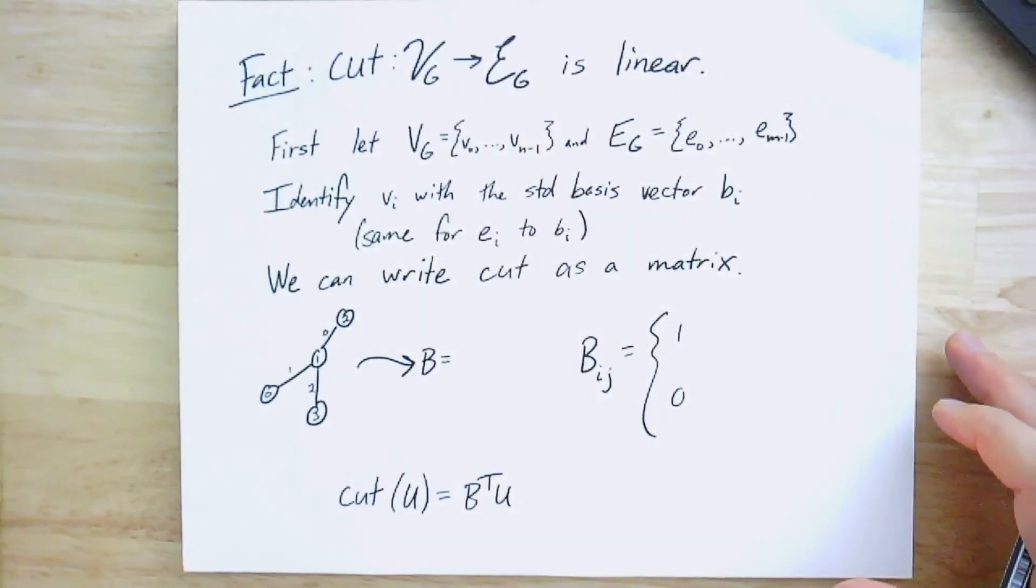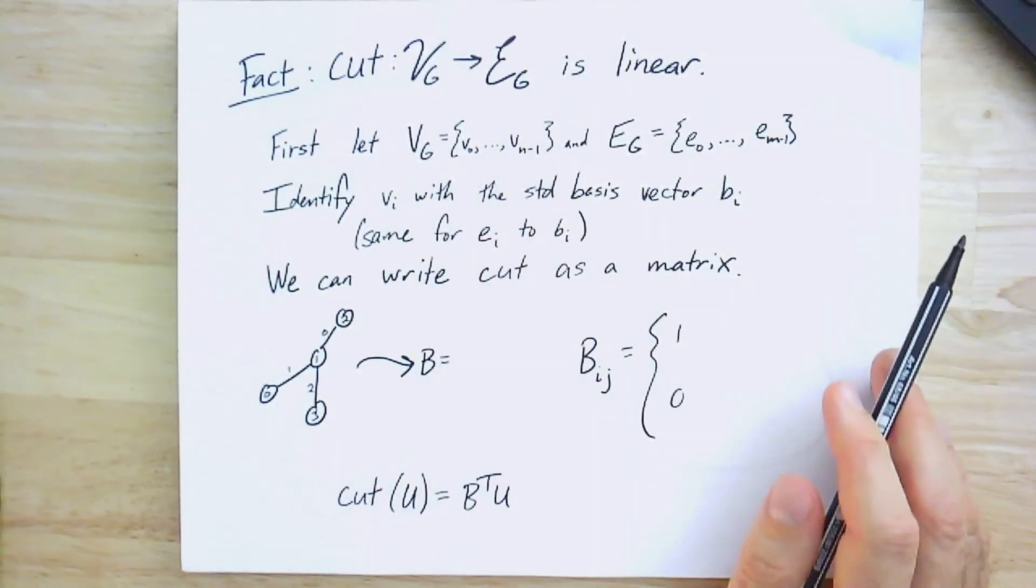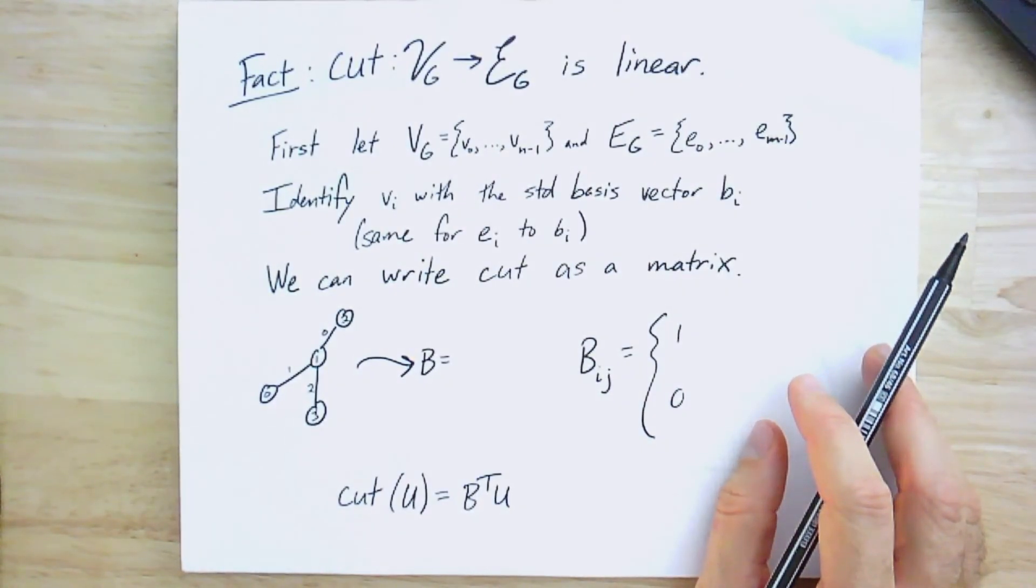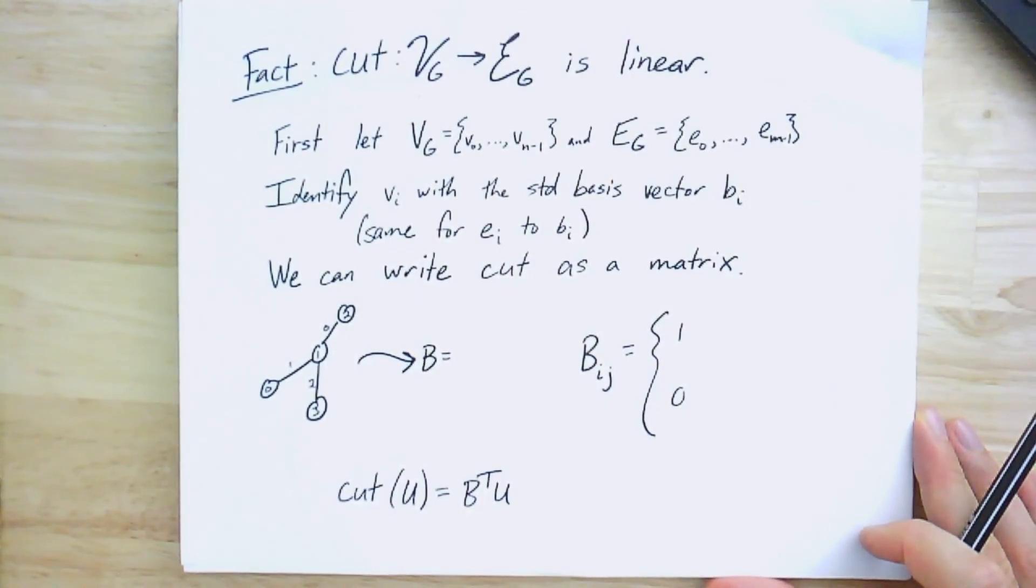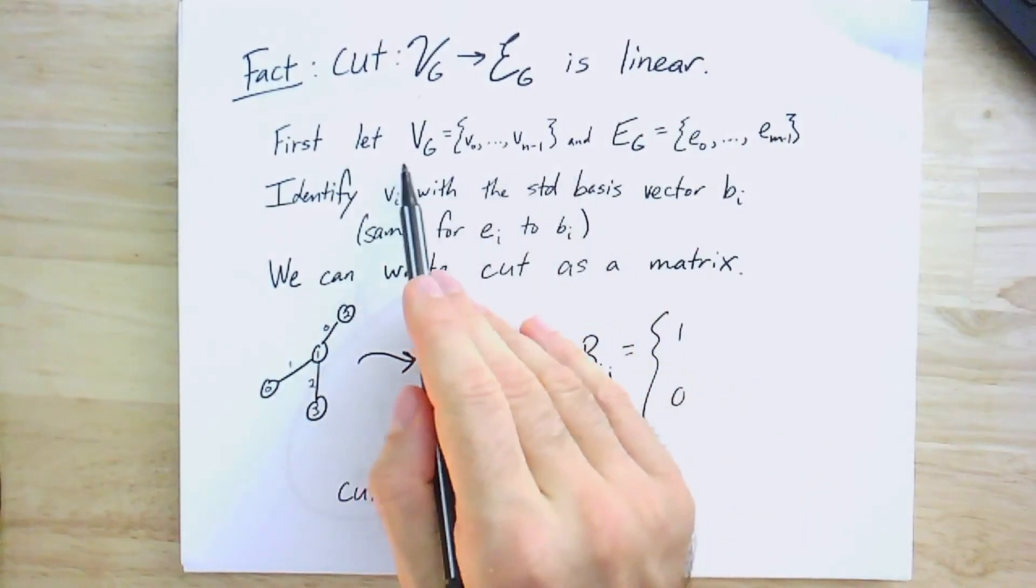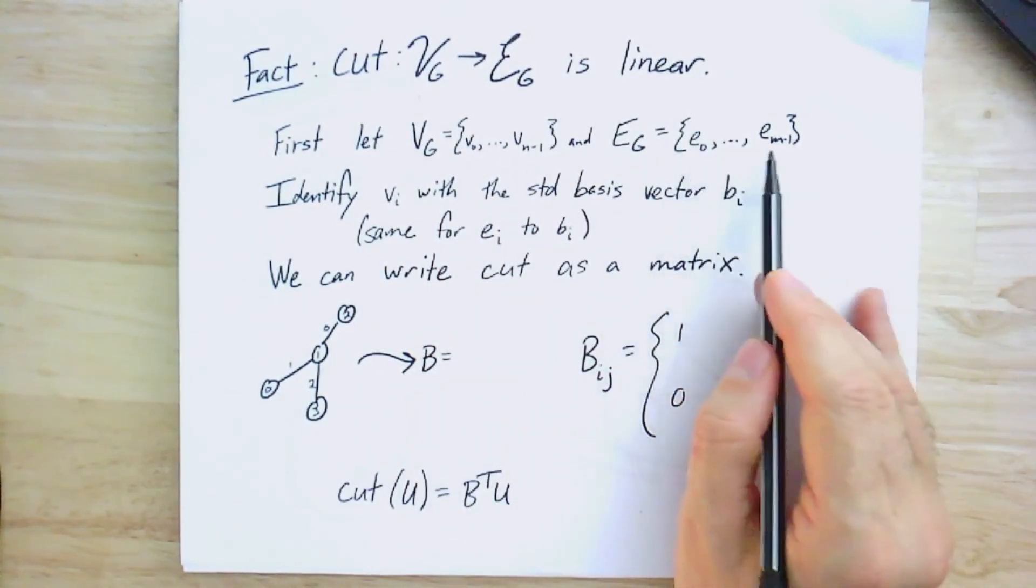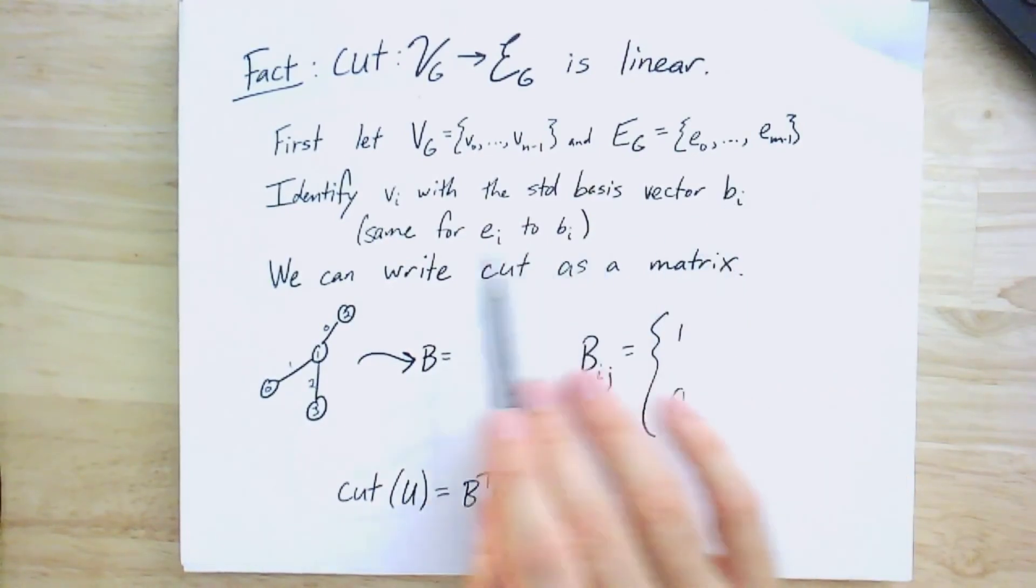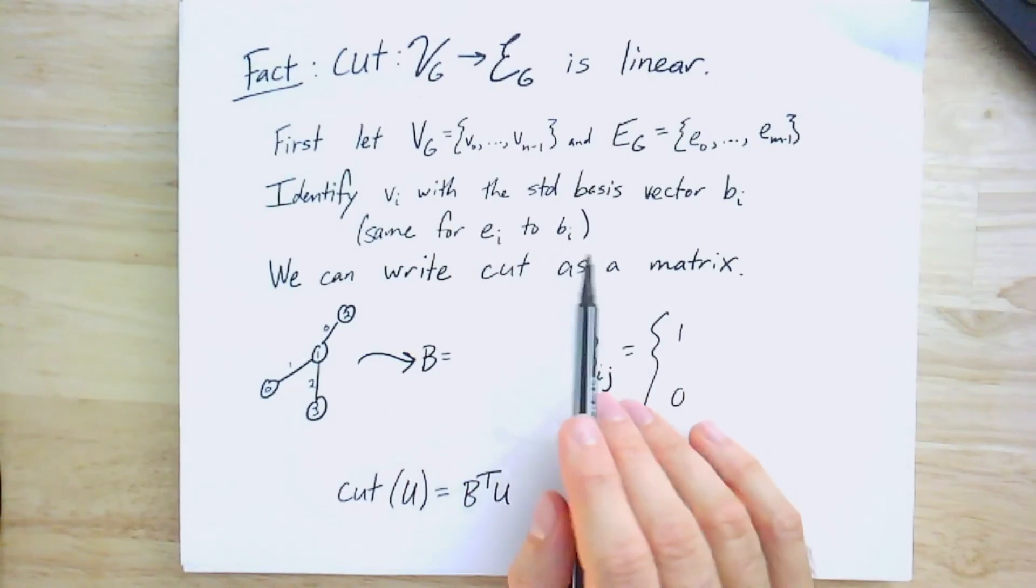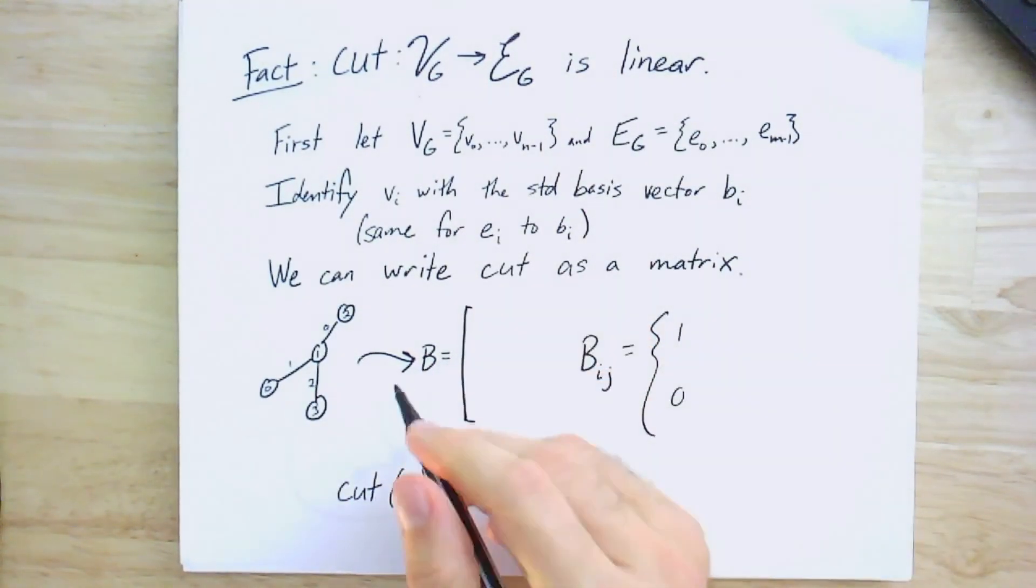To prove that, I'm just going to tell you what the matrix is that realizes the linear transformation. I have two finite dimensional vector spaces, right? This is an n-dimensional space. This is an m-dimensional space. I have a function between them. And if it is a linear map, then it should be realized by some m by n matrix. So here's what we do. First, let's give some numbers to the vertices. So the vertices, let's call them v0 to vn minus 1. And the edges, we'll call them e0 to em minus 1. And we're going to just identify vi with the standard basis vector bi. And the same ei will also be associated with bi. So we're going to write this cut function as a matrix.